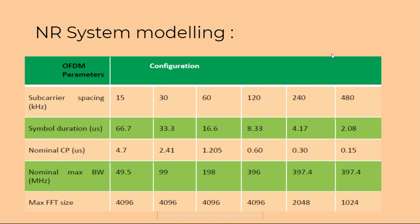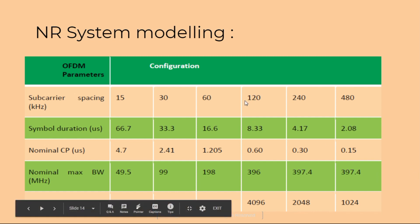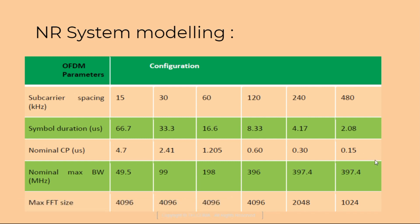The nominal maximum bandwidth is another key parameter. The FFT size is 4096 for 15 kHz, 30 kHz, and 60 kHz sub-carrier spacings. For 240 kHz sub-carrier spacing it is 2048, and for 480 kHz it is 1024.